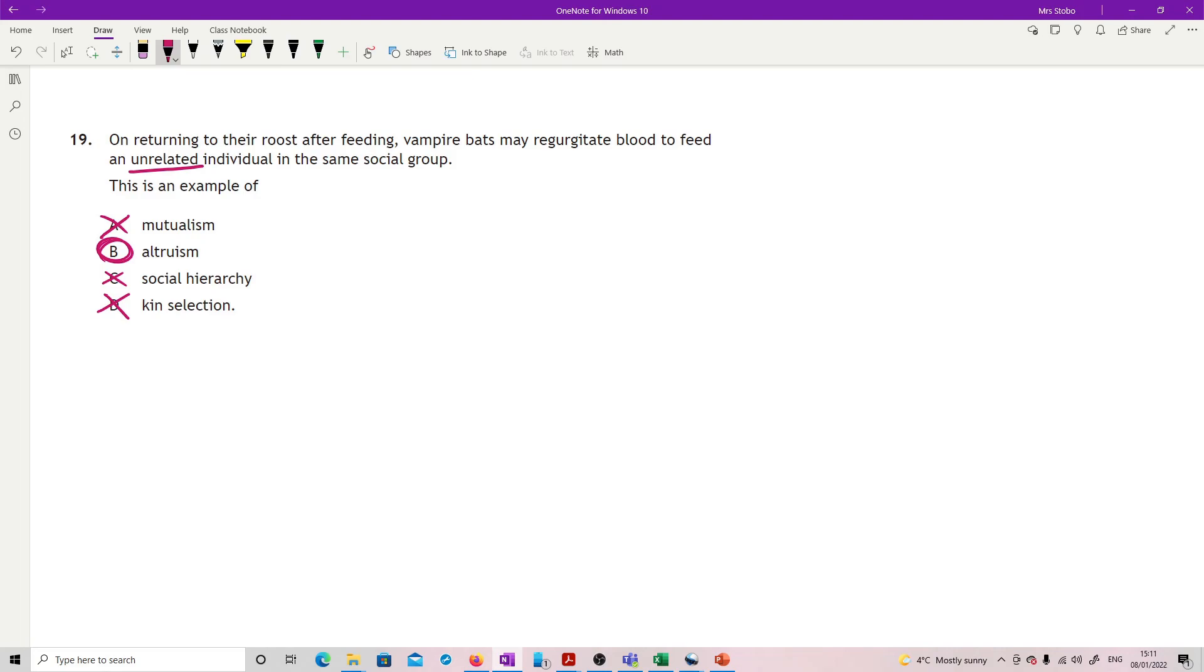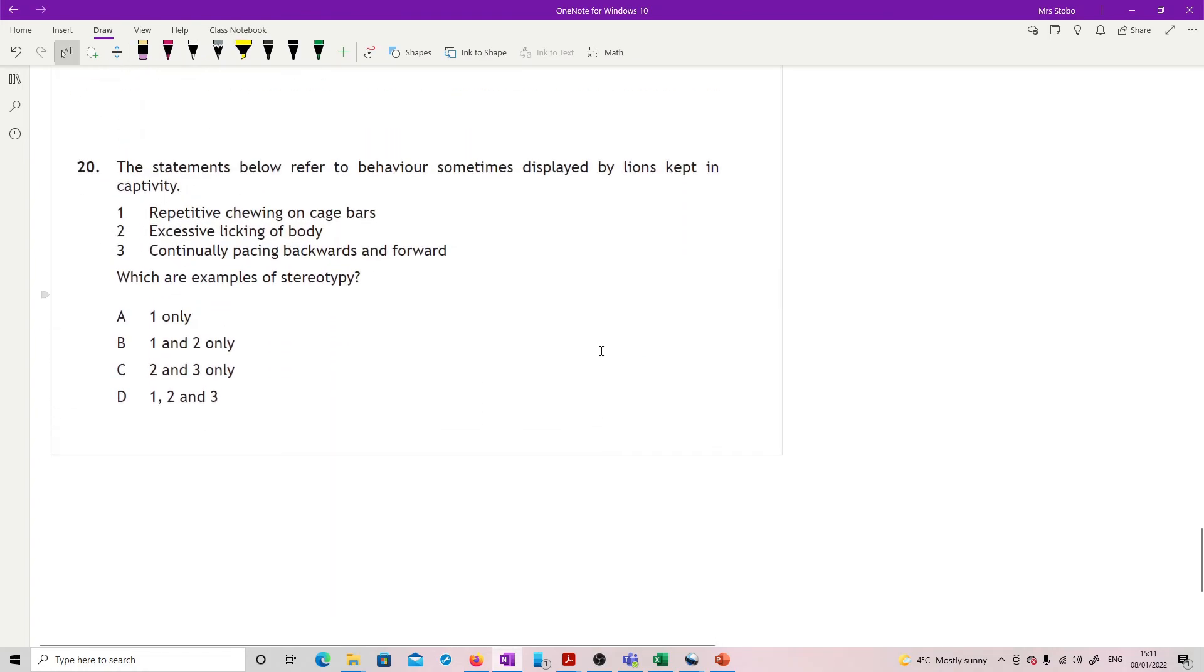Lastly, question 20: Statements below refer to behavior sometimes displayed by lions kept in captivity. We've got repeated chewing on cage bars, excessive licking of body, continually pacing backwards and forwards. We're looking for examples of stereotyping. These are things which are kind of misdirected behavior that you would not expect them to be doing. Repetitive chewing is stereotyping, excessive licking, yes, and continually pacing backwards and forwards. All of these are examples of this.